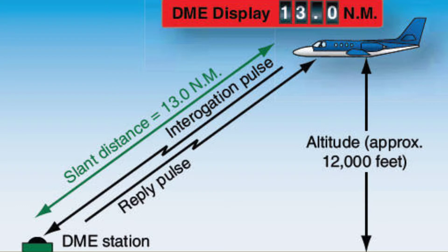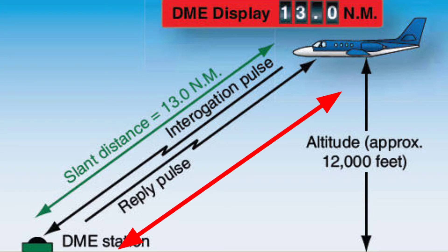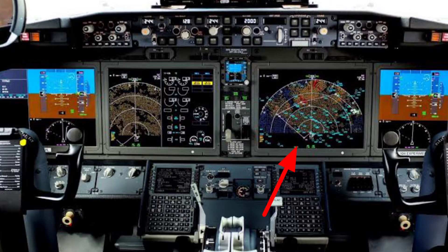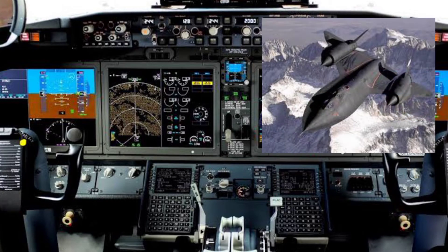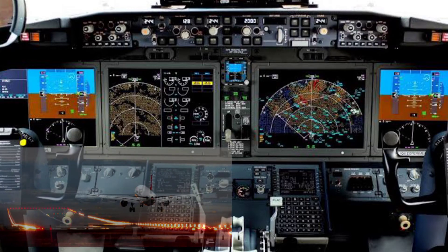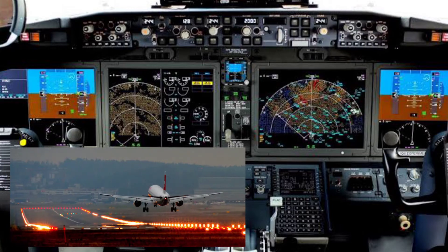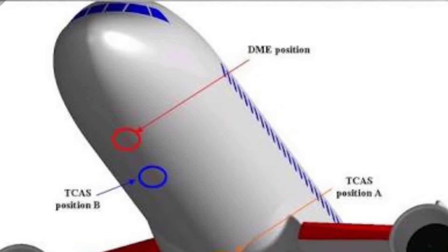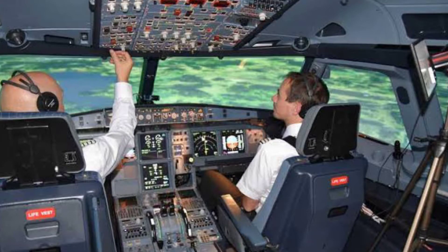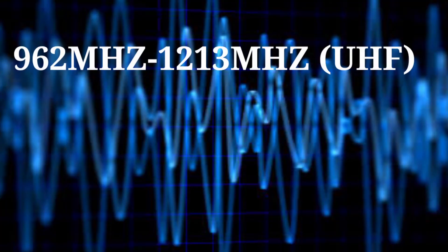A DME system calculates the distance from the aircraft to the DME ground station and displays it on the flight deck. It can also display calculated airspeed and time to arrival when the aircraft is traveling to the station. DME is most important for the aircraft because a pilot can positively identify the location of the aircraft. DME operates in the UHF frequency range from 962 MHz to 1213 MHz.